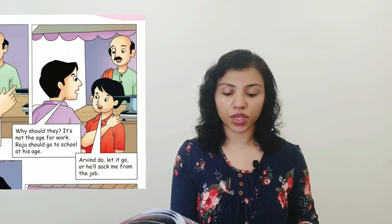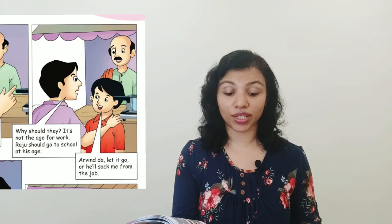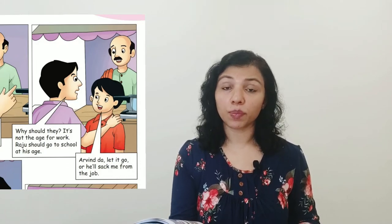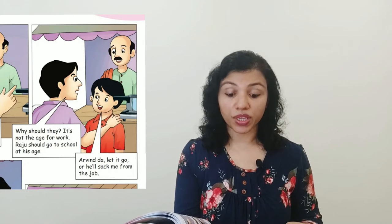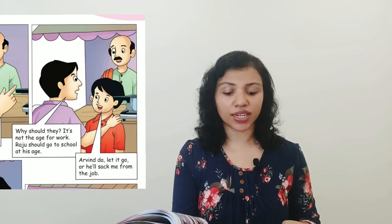The owner says: 'Arvind Babu, these little ones do not work — they just waste time.' He is defending himself, saying he is scolding Raju because he is not doing any work. But Arvind asks him: 'Why should he work? It's not the age for work — this is the age to go to school.' Raju then says: 'Arvinda, let it go or he'll sack me from the job.' Raju is telling Arvind to just leave it because he doesn't want to lose his job.